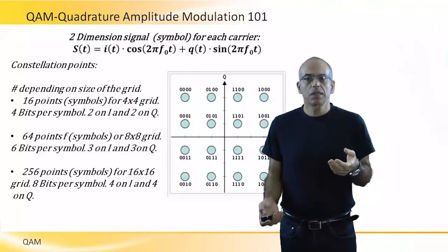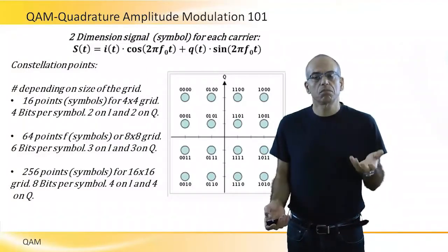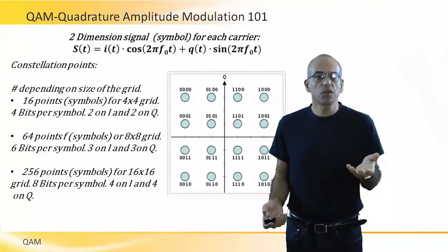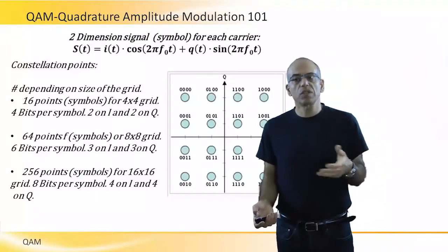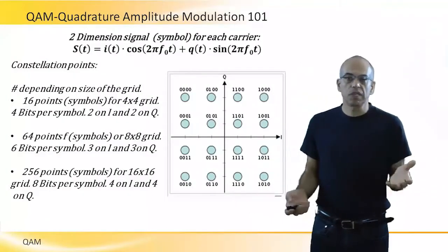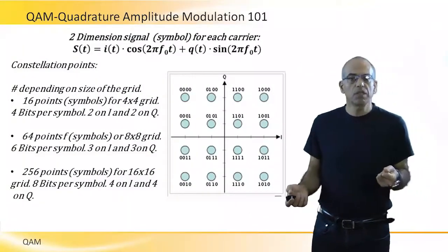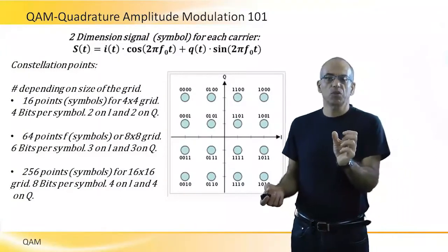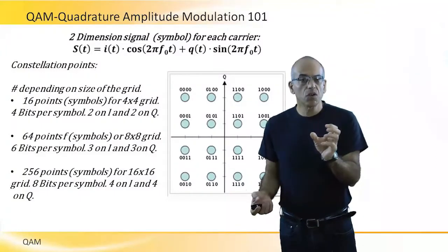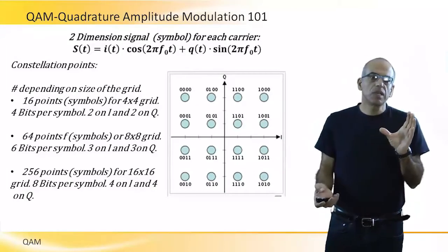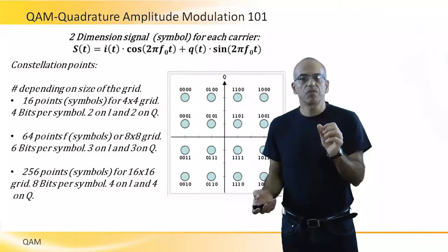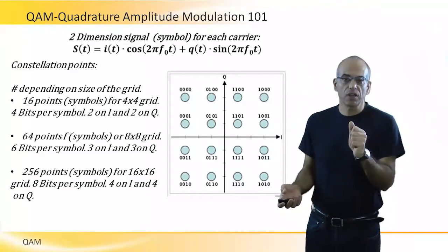We can modulate a signal to QAM 64. Then we'll have 64 points. The matrix will be an 8 by 8 grid, and the data per symbol in QAM 64 will be 6 bits per symbol: 3 for the I value and 3 for the Q value.